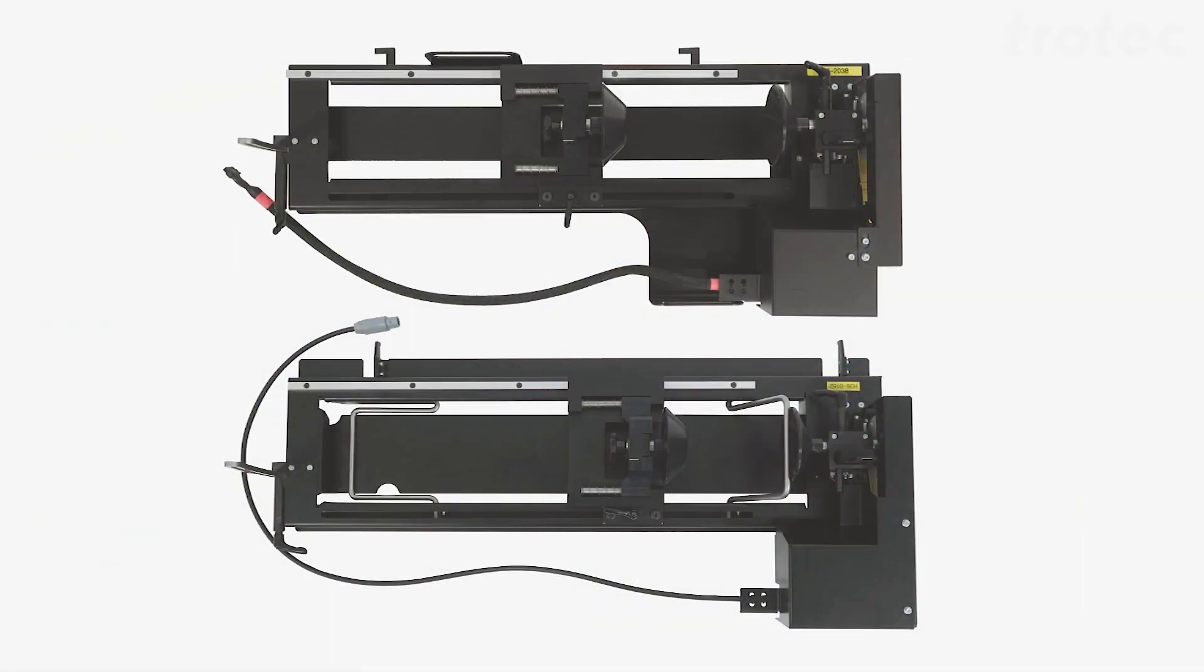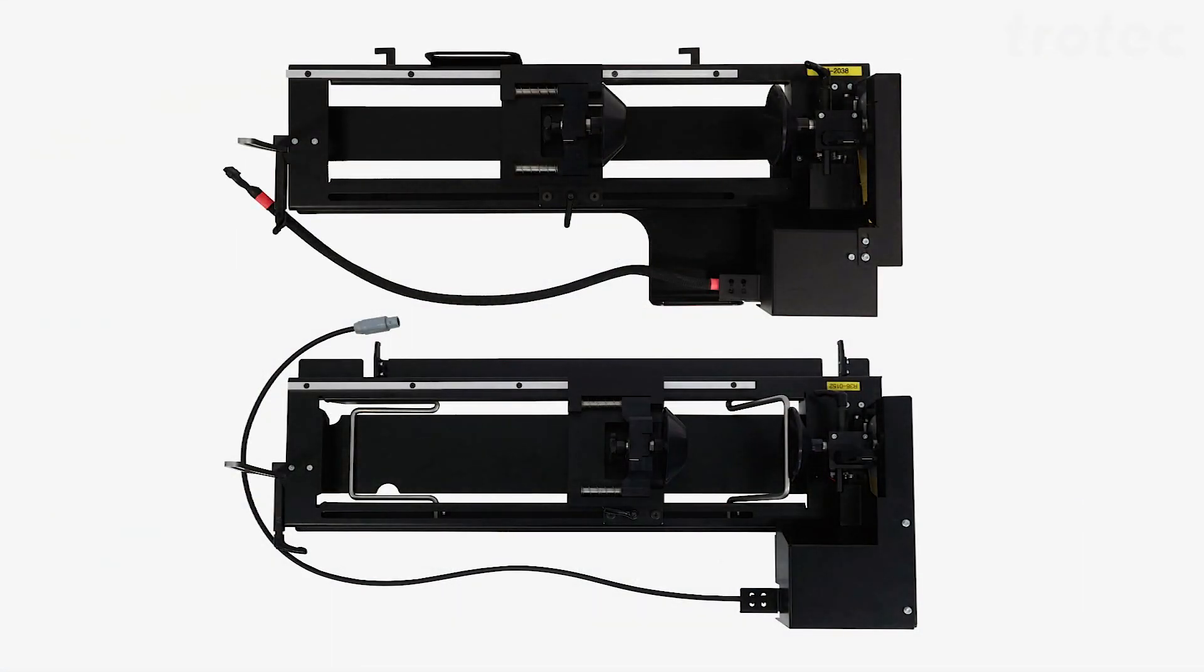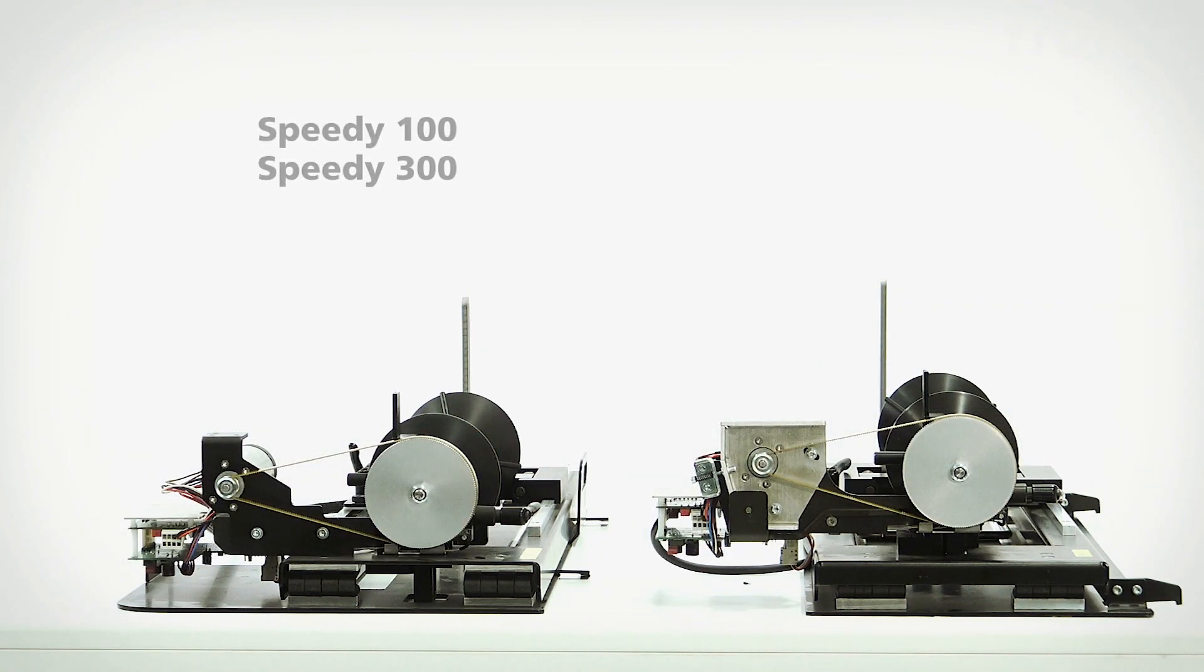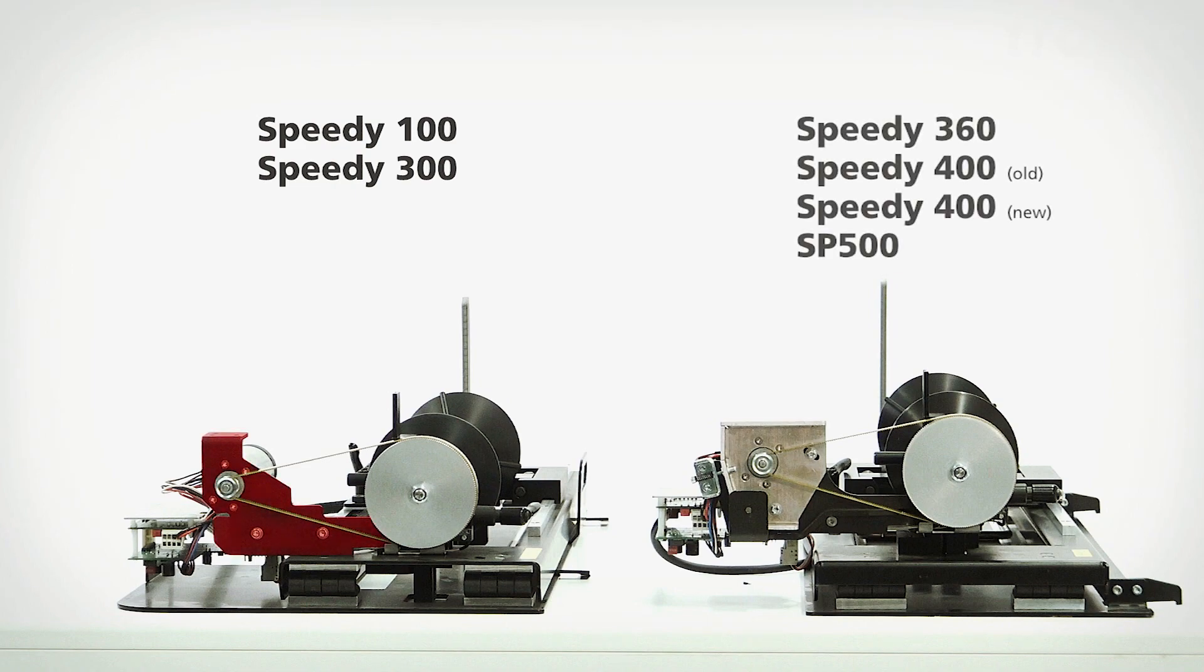Before installing the roller mechanism, we'll first go over the belt tension. Here you can see the rotary for the Speedy 300 and the Speedy 360. To mount the roller mechanism, first remove the covers. The Speedy 100 and Speedy 300 have this type. The Speedy 360 and up have this type. The only difference is the belt tension mechanics.